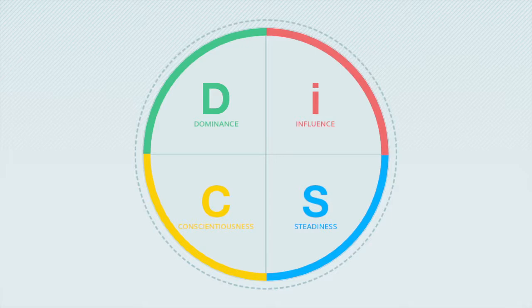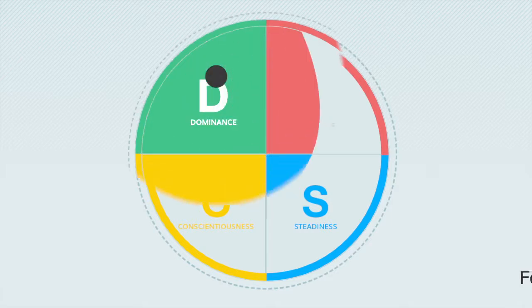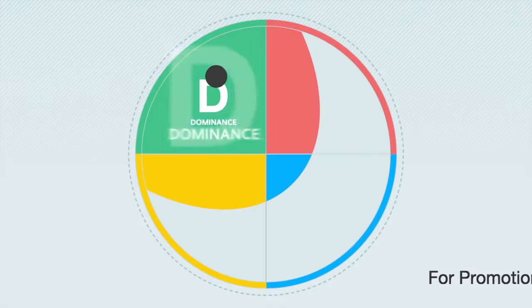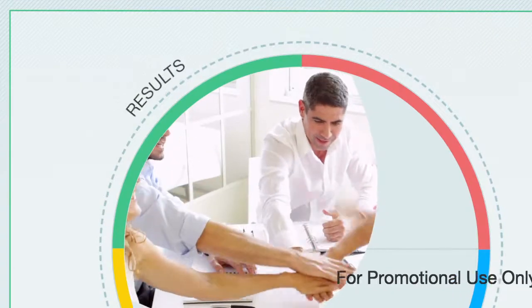First, everyone has a dot. That dot tells you your DISC style. For instance, if you have a D, or dominant style, you probably drive toward results.